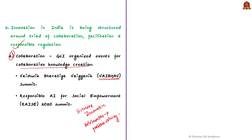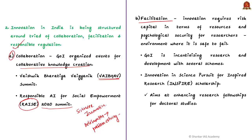Similarly, there was also the Responsible AI for Social Empowerment 2020 summit on artificial intelligence, also called the RISE 2020 summit. Coming to the second aspect of the triad — facilitation — the requirement in innovation is risk capital in terms of resources and psychological security for researchers. It means there needs to be an environment where it is safe to fail. Only then will people start taking risks to innovate. The government is incentivizing R&D with several schemes.